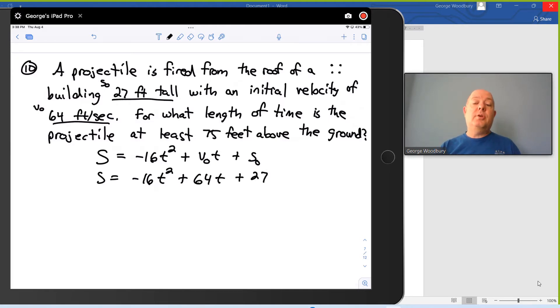And what we want to know is when is this at least 75 feet above the ground? At least 75 means 75 or more. So we want to know when is this greater than or equal to 75 feet. So our inequality is negative 16t squared plus 64t plus 27 greater than or equal to 75.